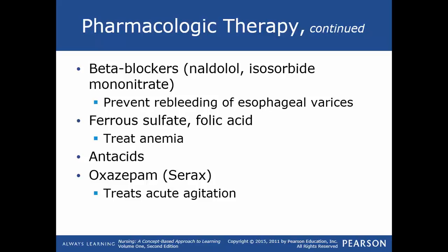Other medications include beta blockers such as nadolol (Corgard), which can be combined with isosorbide mononitrate, to prevent re-bleeding of esophageal varices and lower hepatic venous pressure. Ferrous sulfate and folic acid treat anemia. Vitamin K may be given to decrease the risk of bleeding. When bleeding is acute, packed red blood cells, fresh frozen plasma, or platelets are given to restore blood components and promote hemostasis. Antacids are prescribed as indicated.